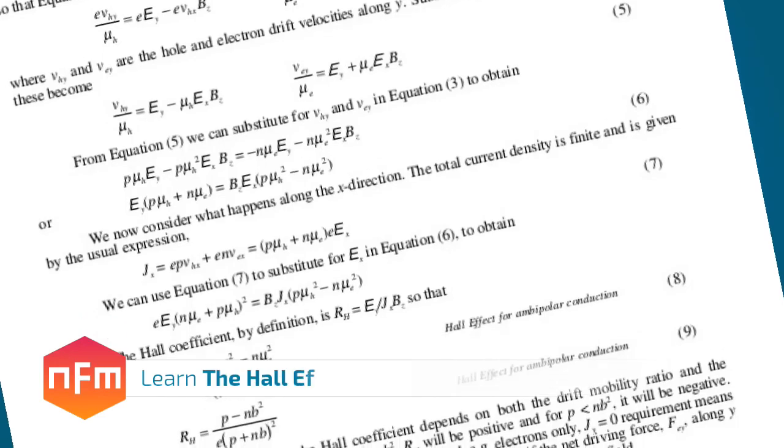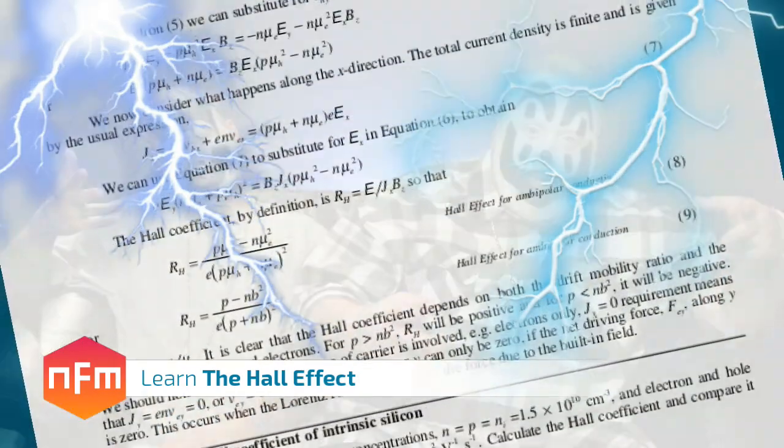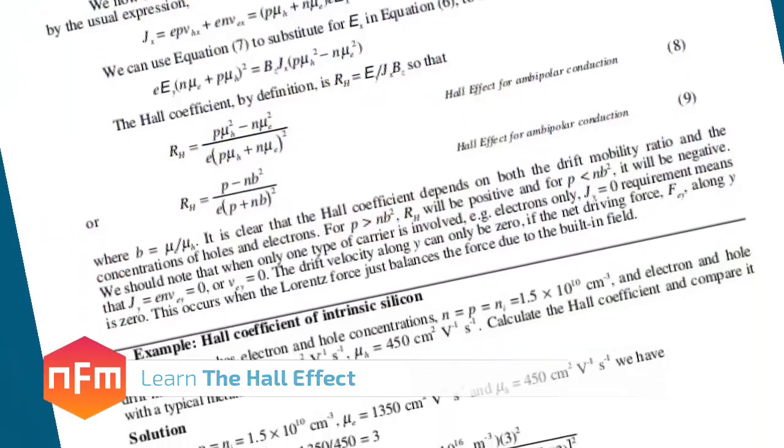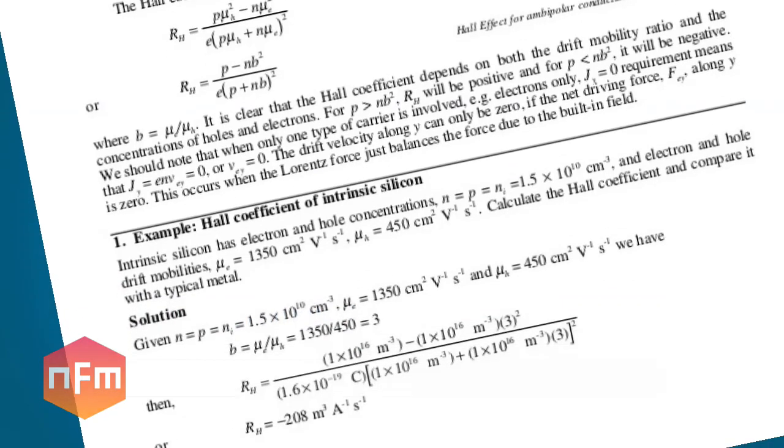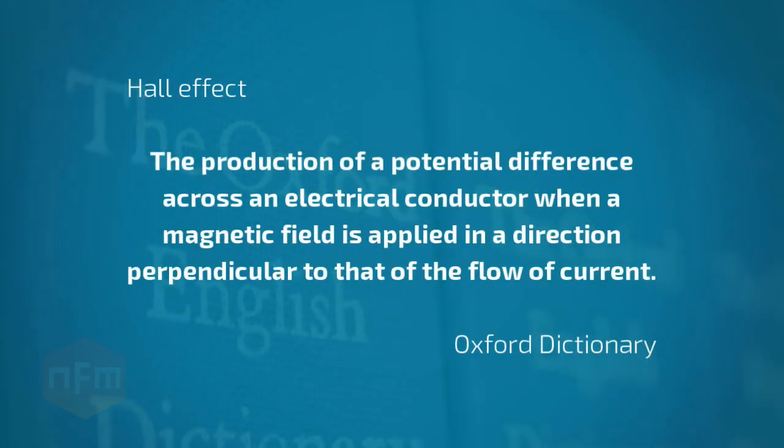The Hall effect, something about magnets and current, right? Well yes, the Hall effect does have a lot to do with magnetic fields and electrical current. The Oxford Dictionary has this to say: the production of a potential difference across an electrical conductor when a magnetic field is applied in a direction perpendicular to that of the flow of current.